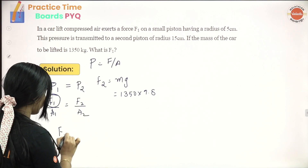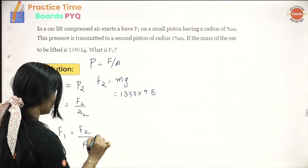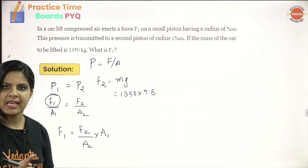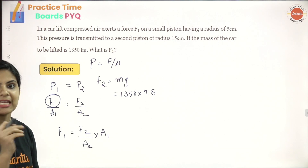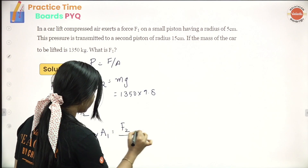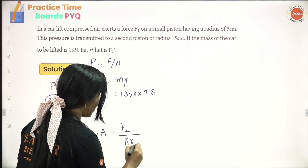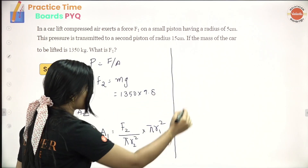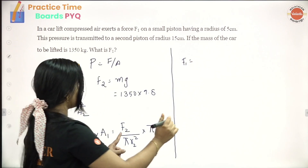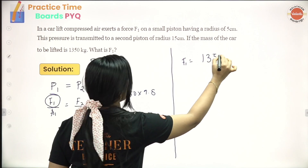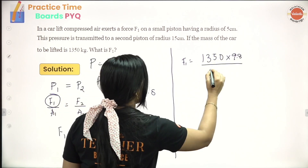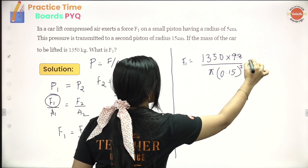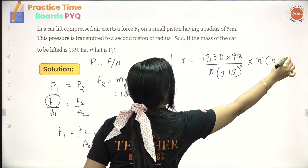F1 is equal to F2 divided by A2, multiplied by A1. We calculate A1 and A2 using pi R squared. So: F1 equals F2 divided by pi R2 squared, multiplied by pi R1 squared. Substituting: F2 is 1,350 into 9.8, R2 is 15 cm (0.15 m), and R1 is 5 cm (0.05 m).